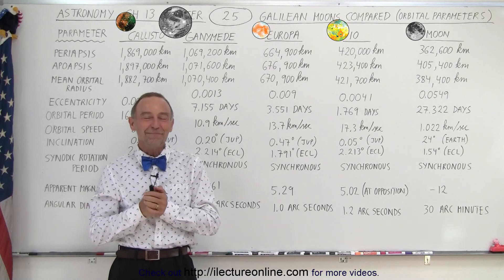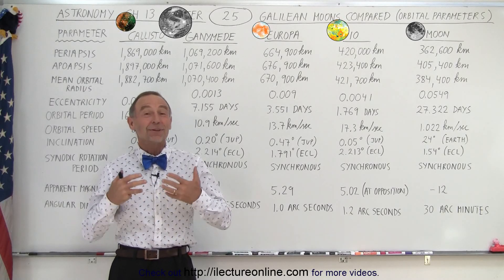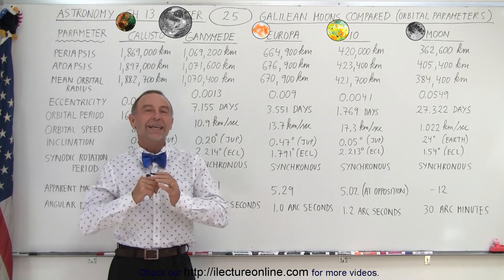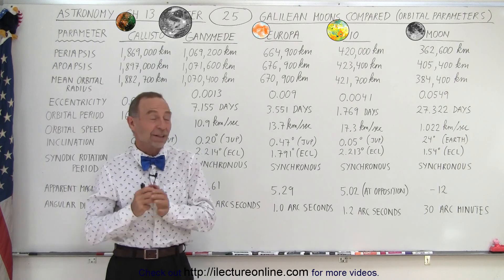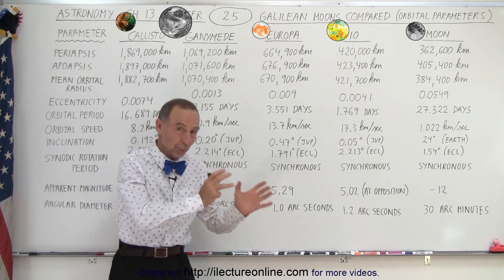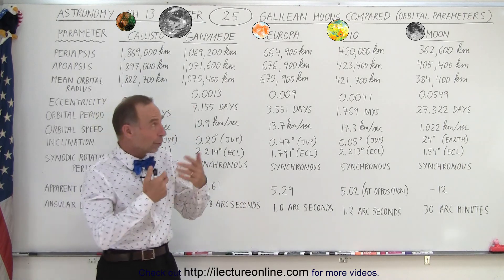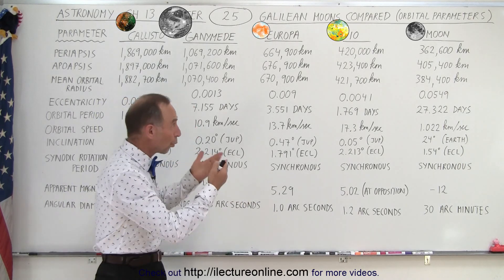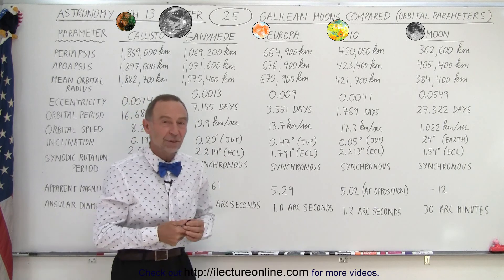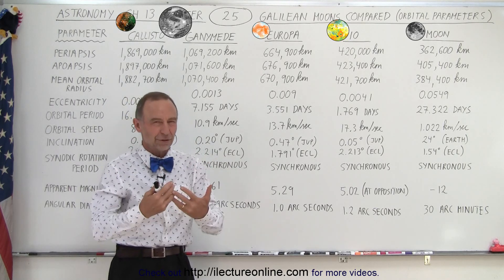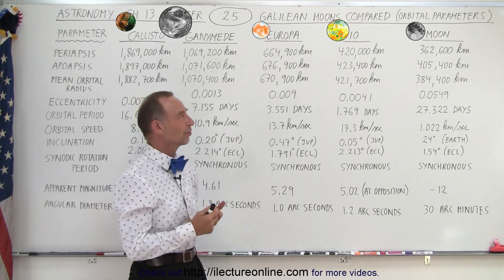Welcome to our lecture online. Here we're going to take a closer look at the four Galilean moons and compare them to our own moon. We're going to start with the orbital parameters, and then in the next video we'll do the physical parameters.